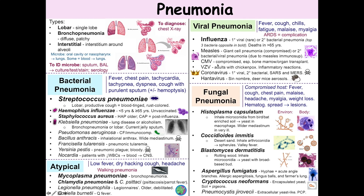Cytomegalovirus (CMV) causes pneumonia in compromised individuals, especially those who have undergone bone marrow or organ transplant. You will see cells in the lungs with those large nuclear inclusion bodies. Varicella zoster virus causes chickenpox, but if an adult gets chickenpox, we are really worried because they may develop a viral pneumonia caused by inflammatory reactions to the virus. Up to 30% of all deaths in adults with chickenpox are actually caused by the pneumonia, and similarly up to 60% of deaths in measles are caused by the pneumonia.